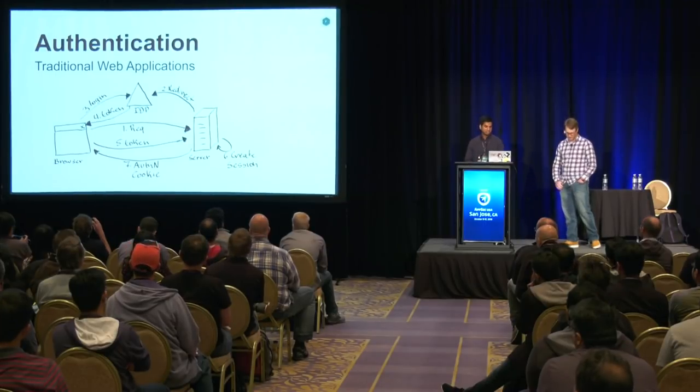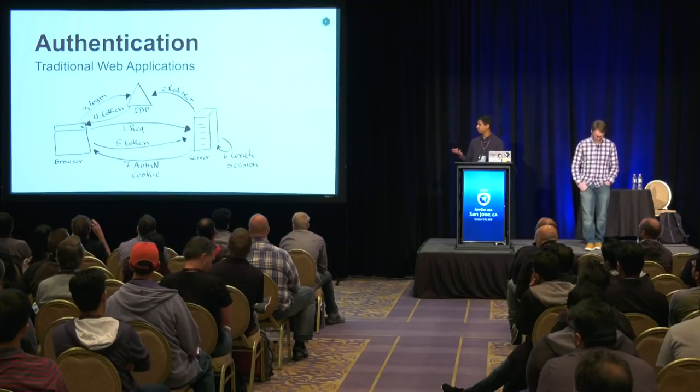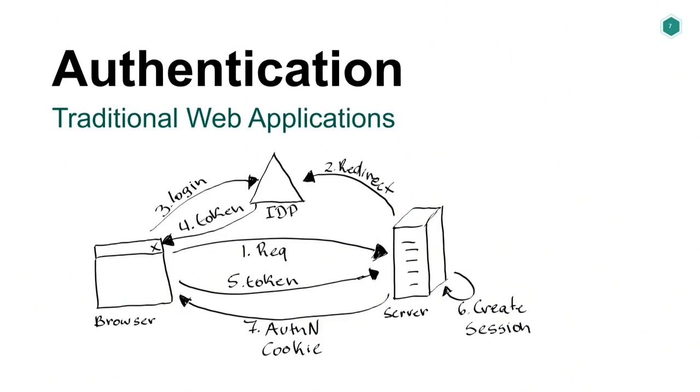Going into authentication — in a traditional web app, authentication with an identity provider works like this: the user tries to access the application, gets redirected to the identity provider, logs in, gets back a token. The browser sends the token back to the server, which creates a session on the server side and sends back a cookie to the browser. Any subsequent request from the browser will send that cookie along to identify itself. In a single-page application, the server-side implementation is much simpler — the server only needs to check whether a valid token is coming along with the request. It is up to the JavaScript running in the browser to make sure it attaches a token with every request.